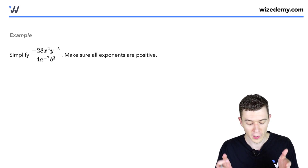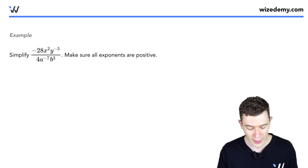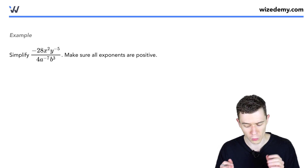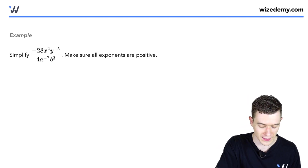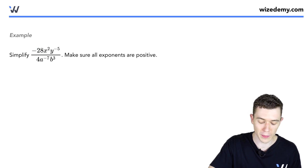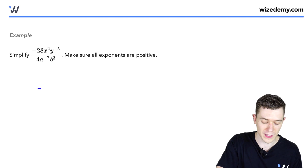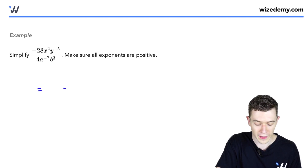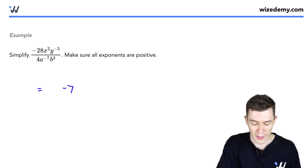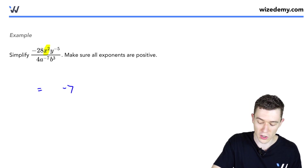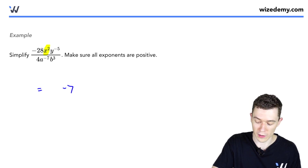Here we have an expression we want to simplify, making sure all exponents are positive. Right off the bat, we have a negative 28 over a 4. Those are like terms we'll be able to simplify. If we simplify negative 28 over 4, that gives us negative 7.